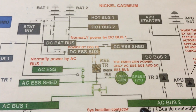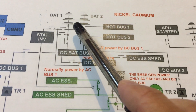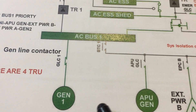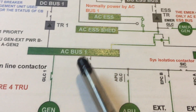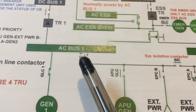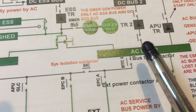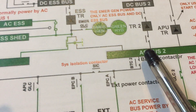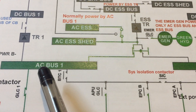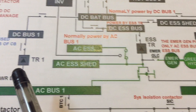All these power sources provide AC except the batteries, which provide DC. Normally the engine generator would power its own bus — generator number one powers AC bus number one, generator number two powers AC bus number two. From the AC buses there are transformer rectifiers (TRs).